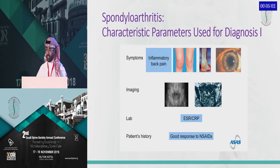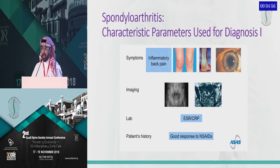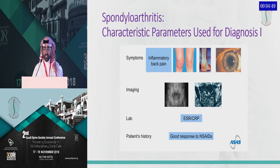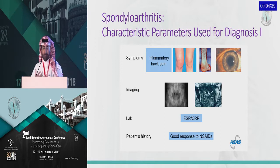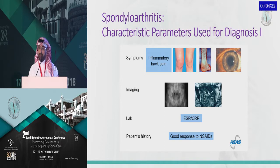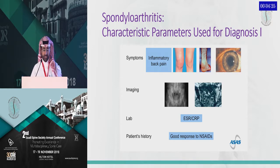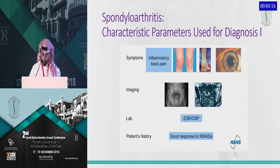Here are the characteristic parameters you should look for to aid in the diagnosis of these diseases. Regarding symptoms: inflammatory back pain as mentioned, plus arthritis which is usually asymmetric involving larger joints, enthesitis such as at the Achilles tendon, and uveitis as an extra-articular manifestation. On imaging, sacroiliitis can be seen, but this may be delayed for years on plain x-ray — MRI is more sensitive and specific, showing bone marrow edema characteristic of sacroiliitis. Two-thirds of patients may have elevated acute phase reactants like ESR and CRP, and patients typically show good response to NSAIDs, which is characteristic for inflammatory back pain and not seen with mechanical pain.